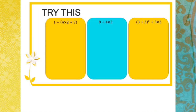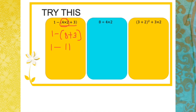Let's try this: 1 - (4 × 2 + 3). We do inside the brackets first, and since there are two operations inside, we follow BIDMAS and do the multiplication first: 4 × 2 = 8, giving 1 - (8 + 3) = 1 - 11 = negative 10.